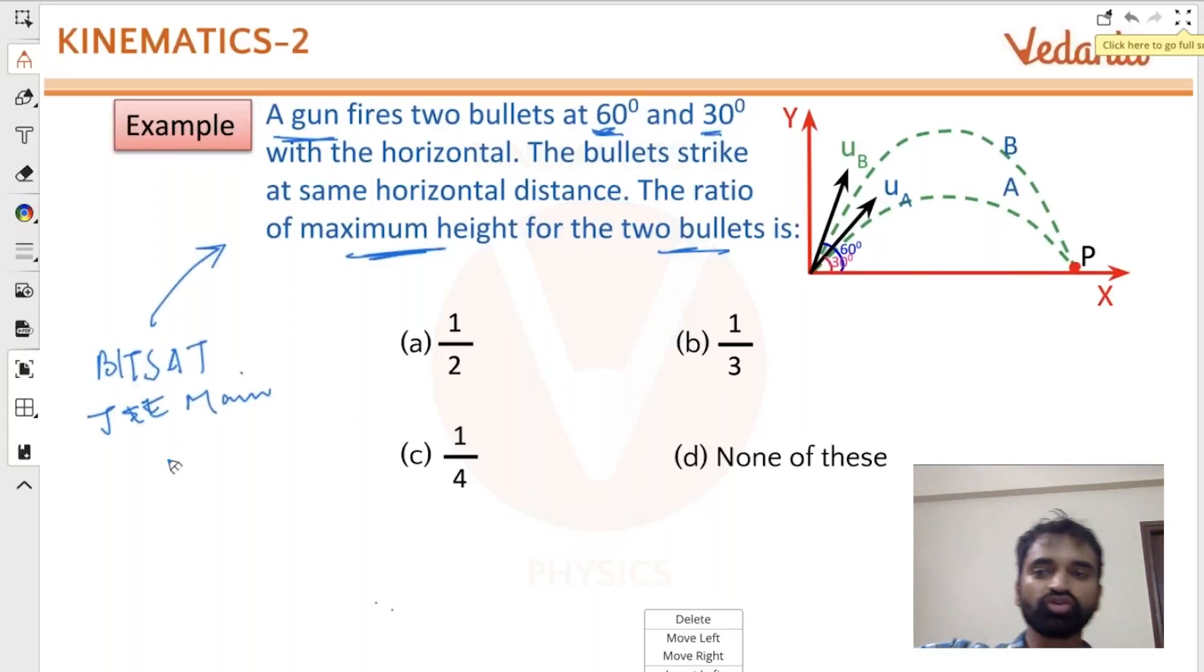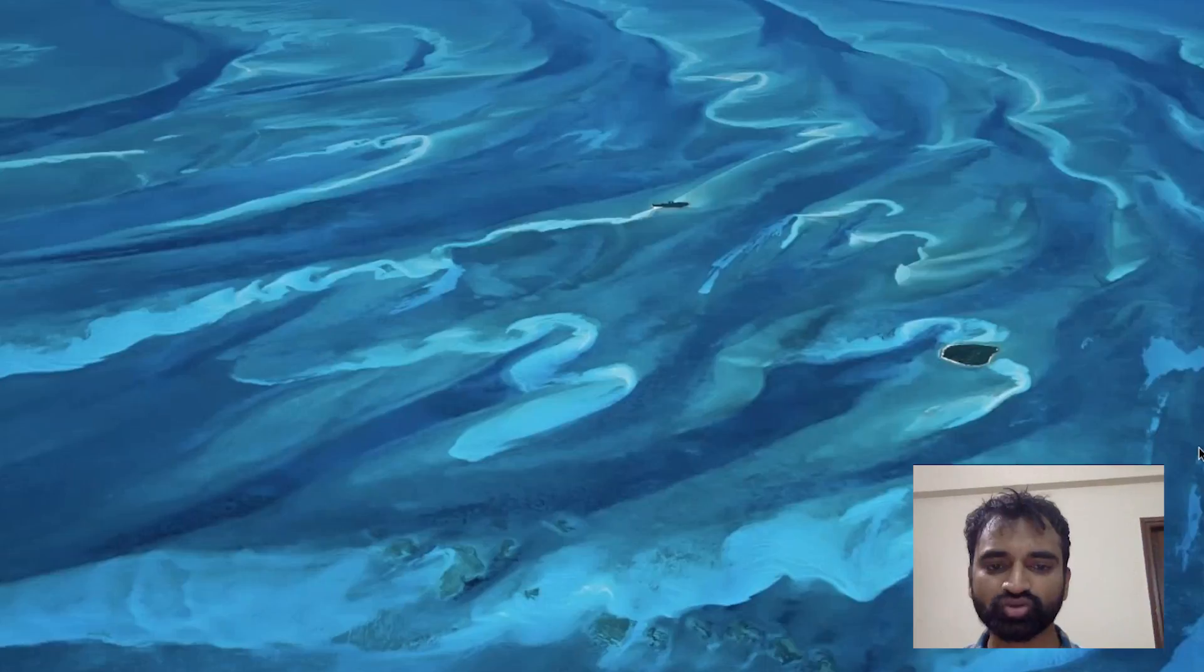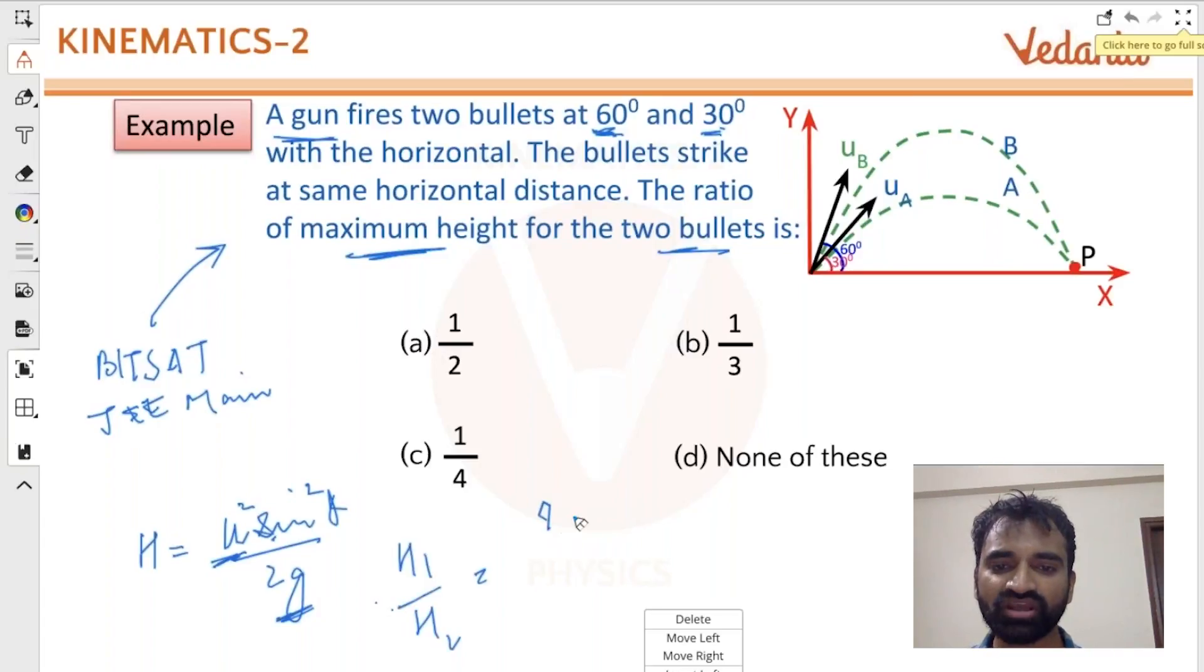Since you have practiced those questions so many times, you will automatically remember the formula. For example, I do remember that h is u squared sine squared theta upon 2g, and the angle is 60 degrees and 30 degrees. u remains the same for both cases, g remains the same for both cases. So if I want to find out h1 upon h2, I need to find out the ratio between sine squared theta 1 and sine squared theta 2.